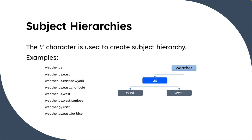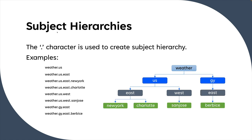Under 'us' you have 'east' and 'west', because we have subject names with a dot between 'weather' and 'us', and then a dot between 'us' and 'east', and 'us' and 'west'. Each one of these is called a token — that's why we say the subject name contains tokens separated by the dot character. But the subject name 'weather.us.east' is one subject name, 'weather.us' is a different one — they're all distinct subjects that just happen to contain tokens.